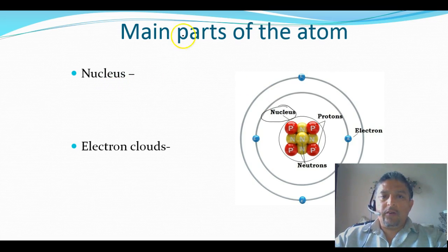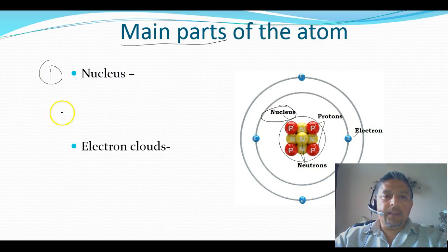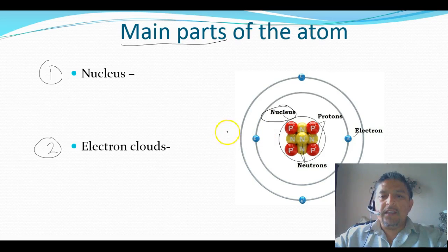So here we go, the two main parts. Remember these are the main parts of the atom. We got two main parts. One of them will be the nucleus of the atom and the second one will be these circles around the atom, which is around the nucleus, which is the electron clouds.